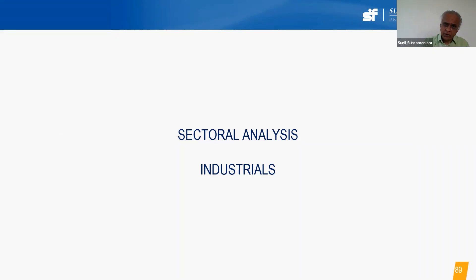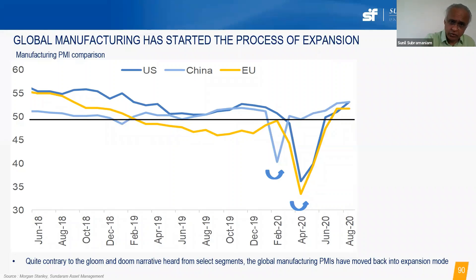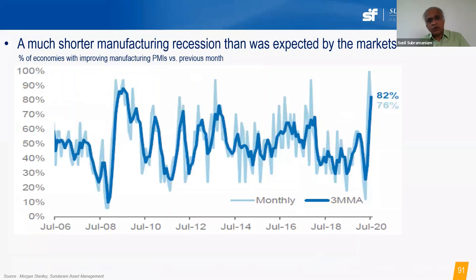Now let's look at the cyclical and industrial sectors, which the first slide showed still have negative one-year returns. Industry has a connection to the world, and manufacturing PMIs are recovering in the US and Europe, following China's lead. The world is recovering faster than expected — 82% of countries showed improvement in their PMI compared to the previous month.